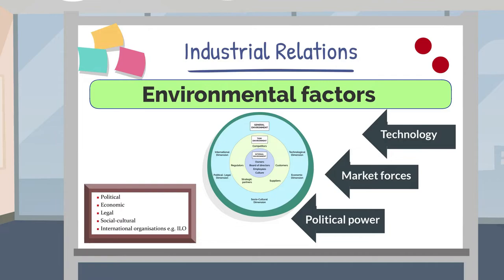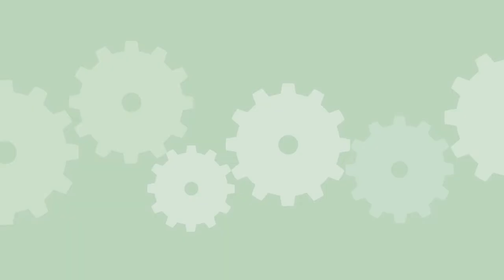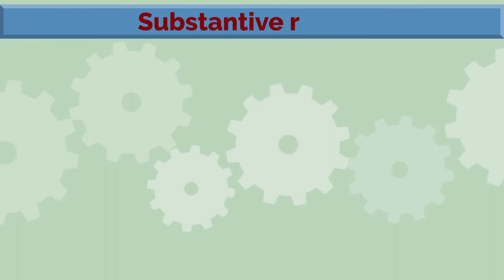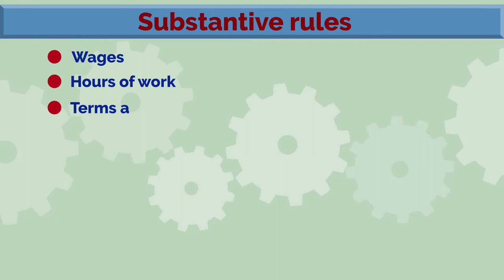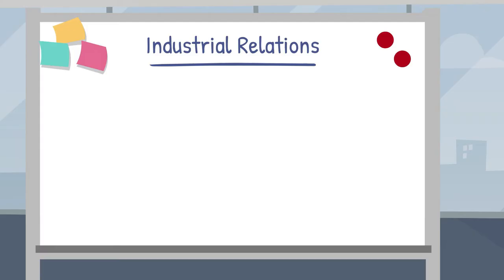The web of rules tells us quite a lot about the employment relationship in the workplace and exists to govern that relationship. These can be substantive rules, which address issues such as wages, hours of work, and other terms and conditions of employment, and procedural rules, which pertain to discipline, settling disputes, and redundancy.